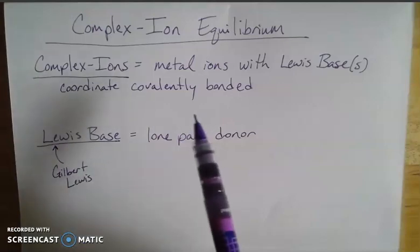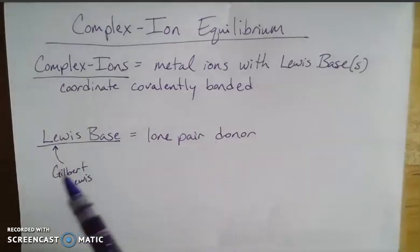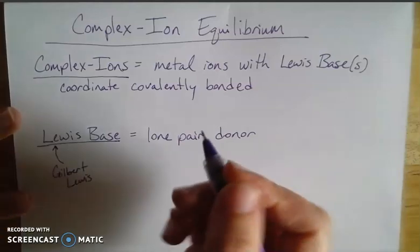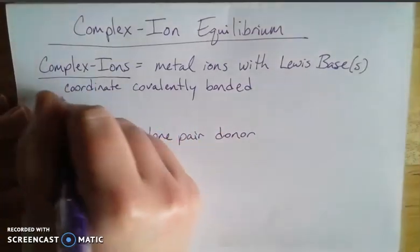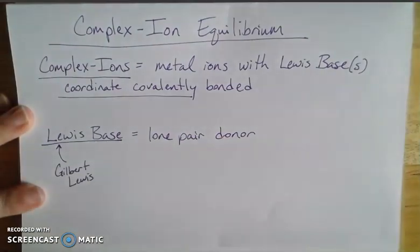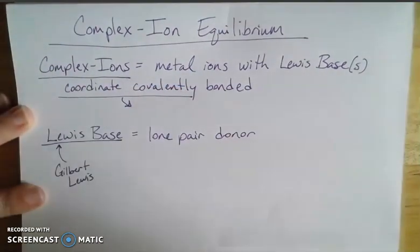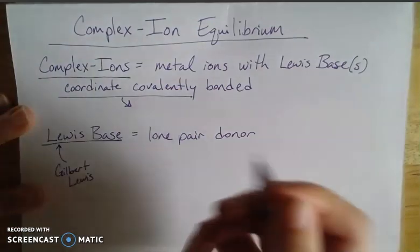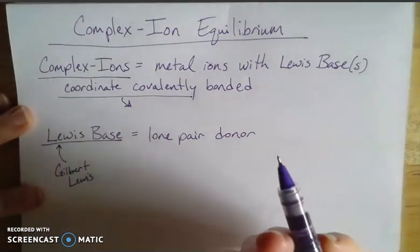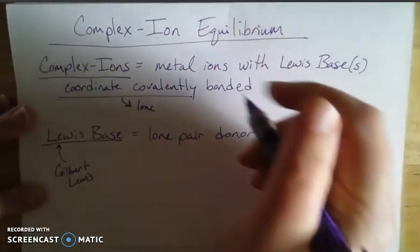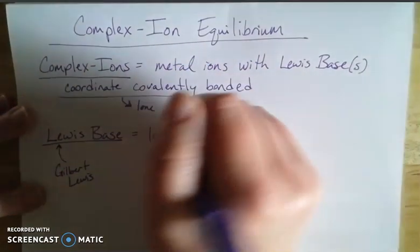So complex ions themselves are metal ions, we're talking about cations, that have Lewis bases that are coordinate covalently bonded. And if you'll recall from our discussions of bonding, coordinate covalent bonds mean that the whole lone pair is coming from one of the elements there. So the lone pair that is being shared comes from one element or one side of the chemical bond.